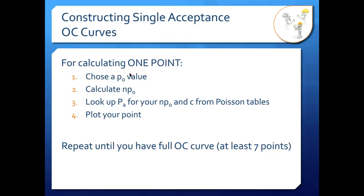Notice that this is for calculating a single point. To actually construct a full OC curve, we're going to need to do this multiple times. But for each point, we use the same procedure. First, we choose a P0 value or the fraction non-conforming in our population. Notice that this is fraction non-conforming, not percent non-conforming. So if I choose that I have 1% non-conforming in my population, then I need to convert that to 0.01 for my calculations. This will not work properly if you use percents instead of fractions.